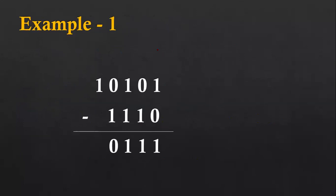Now I am going to explain example number one. Here you can see two binary values are available. The first one is 10101 and the second one is 1110. So I am going to explain the subtraction now. First, the first column: one minus zero, so the result will be one.